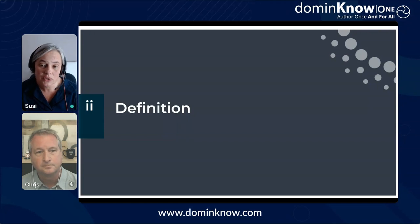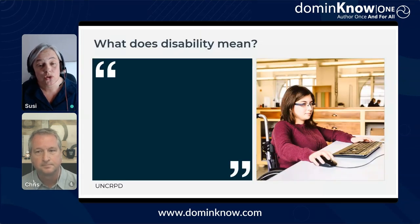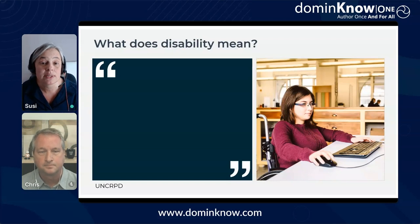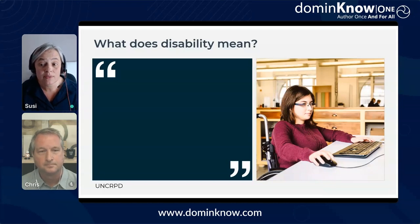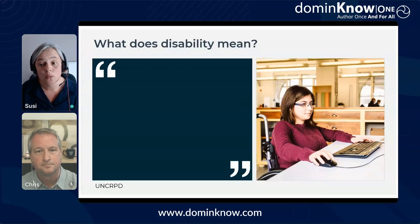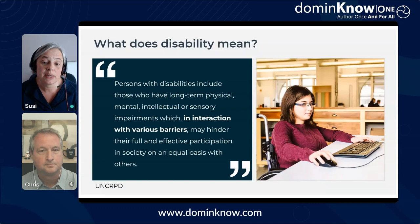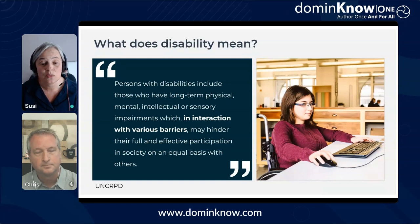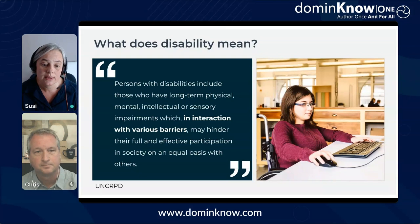This leads me on to a definition of disability which I found to be really useful. Farisai's story is a great demonstration of the social model of disability. This is based on the idea that disability is caused by barriers which are created when products and services are not designed to include people with different access needs. If these barriers are removed, then someone who is disabled can have an equal experience to everyone else. This definition of disability from the UNCRPD does a great job articulating this concept — it says that persons with disabilities include those who have long-term physical, mental, intellectual or sensory impairments which, in interaction with various barriers, may hinder their full and effective participation in society on an equal basis with others.